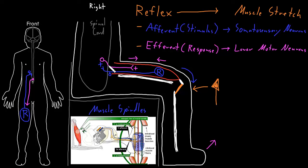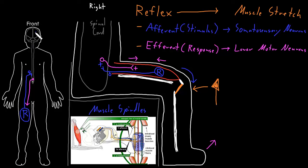One important thing to notice about reflexes is that all of this occurs down here in the spinal cord, or in the brainstem for brainstem reflexes. The higher parts of the nervous system — the cerebrum, where higher functions like cognition, emotion, and consciousness reside — don't have to get involved for a reflex to occur. This is why we say reflexes are responses to stimuli that don't require the involvement of consciousness: the wiring occurs at these lower parts of the central and peripheral nervous system, without involving the cerebrum.